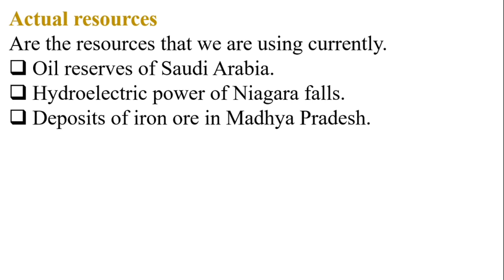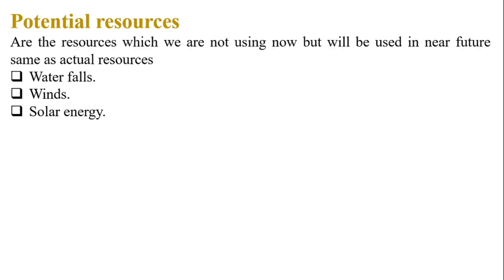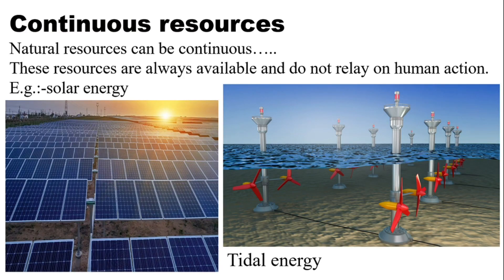Next are actual resources and potential resources. Actual resources are the resources that we are currently using. The best examples are oil reserves of Saudi Arabia, hydroelectric power of Niagara Falls, and deposits of iron ore in Madhya Pradesh. Potential resources are those which are not used now but will be used in the near future, such as waterfalls, wind, and solar energy.